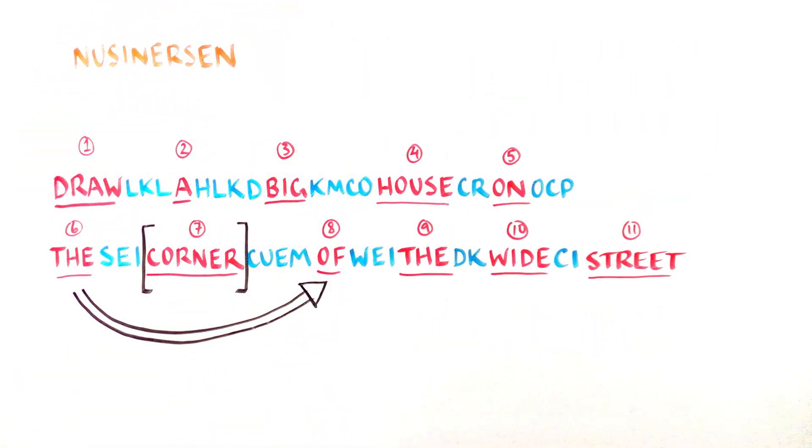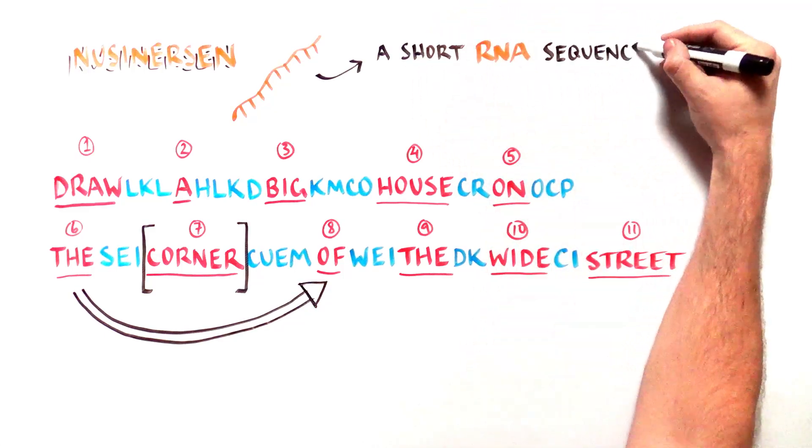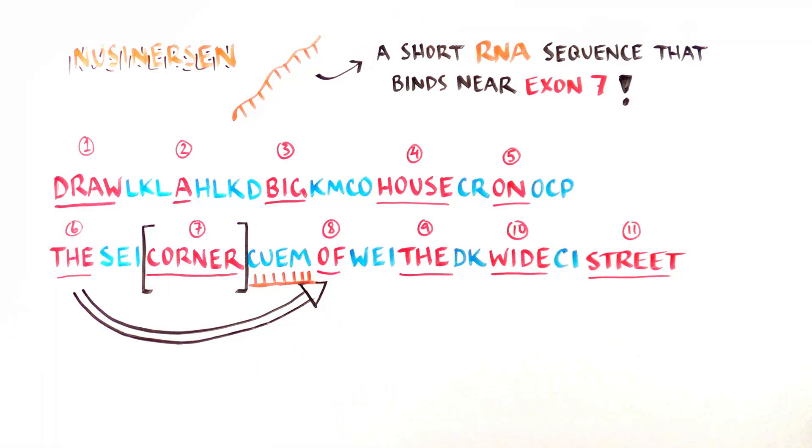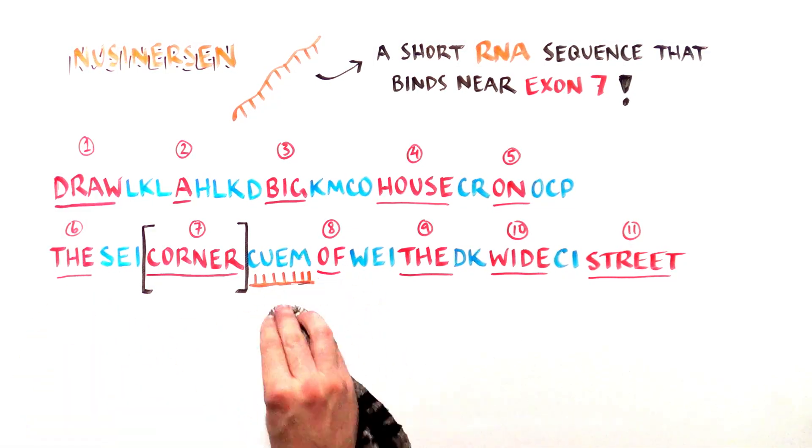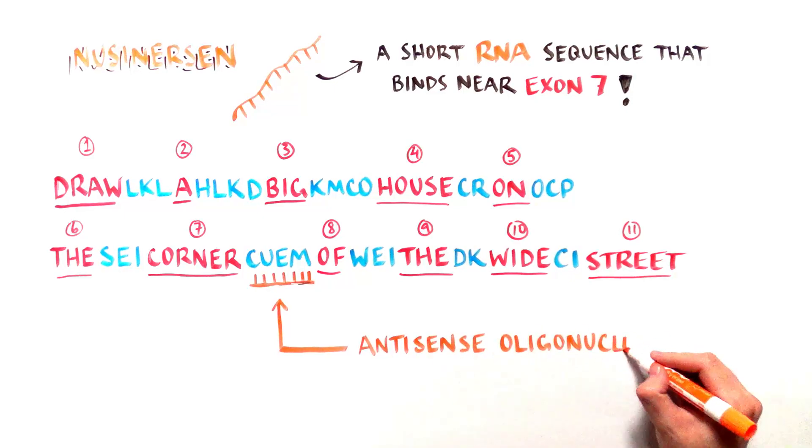Nusinersen is a short sequence of RNA that binds just after exon 7 in the unedited RNA message. This tiny piece of RNA prevents exon 7 from being skipped. It is called an antisense oligonucleotide, or ASO.